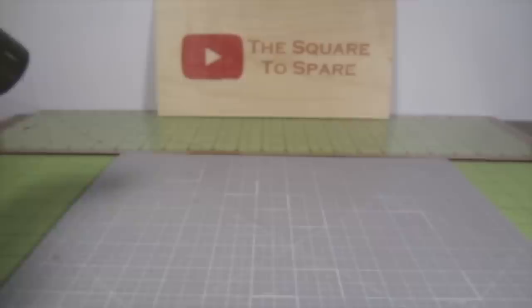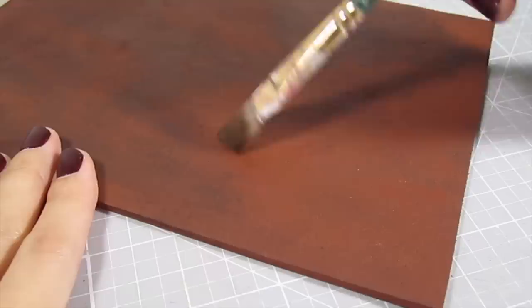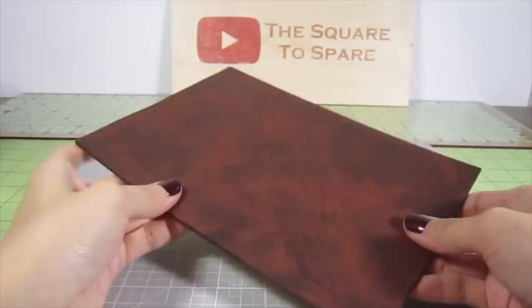Once that's dry, I take some burnt umber which is a very dark brown paint. Dry brush lightly across the surface for some texture. Now I'm going to use the paper backing and stick it onto the outer sidewall. This will be our book cover.